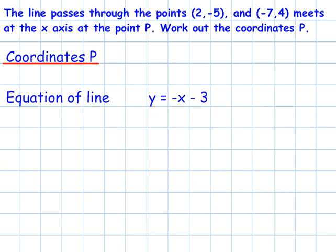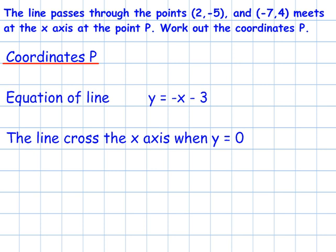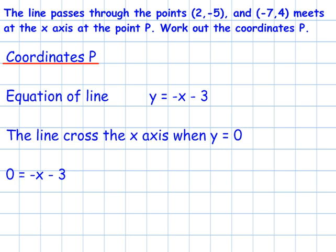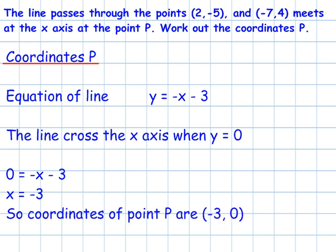So now we have the equation of that line. The line crosses the x-axis when y is 0, so let's put y equal to 0. So 0 equals minus x minus 3. But if we move the x across, that gives us x equals minus 3. So the coordinates of P are (-3, 0).